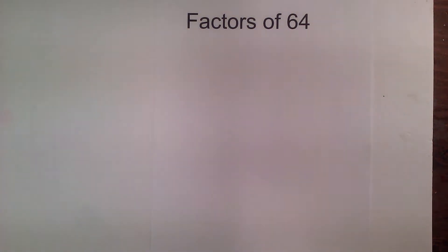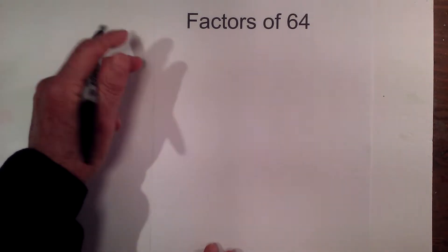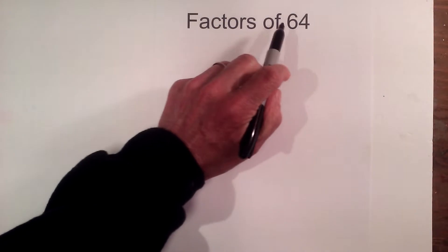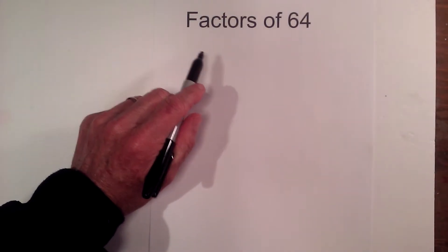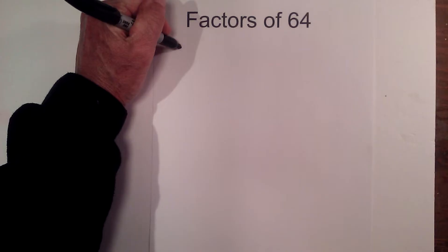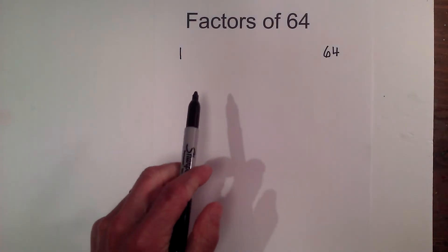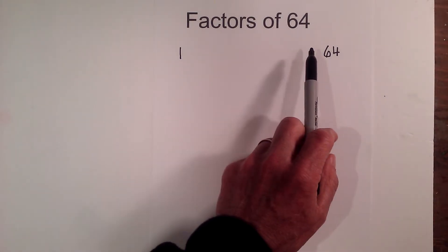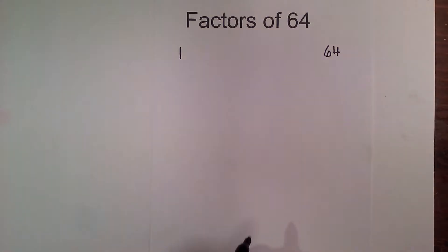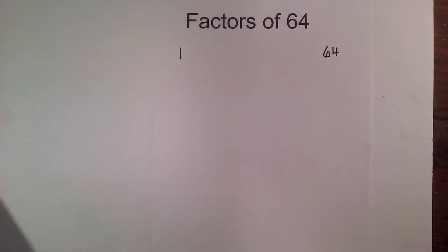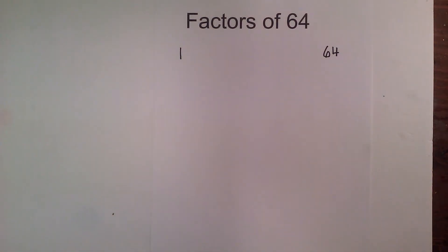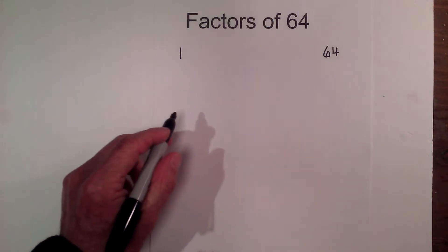In this video, let's find all the factors that divide into 64. I like to use the rainbow technique. First, 64 is a composite number, so numbers other than 1 and itself divide into it. I write a 1 here and a 64 over here, then find the numbers in between that divide evenly into 64. I also have a divisibility rules chart that can help — I'll leave a link for a free download.